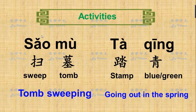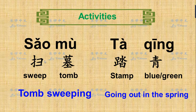The first thing people must do is go to sweep the tomb of the people you want to memorize. In Chinese we say 扫墓. 扫 means sweep — it's the same verb you use when you sweep or clean the floor. 墓 means tomb. So the number one activity is tomb sweeping, 扫墓.